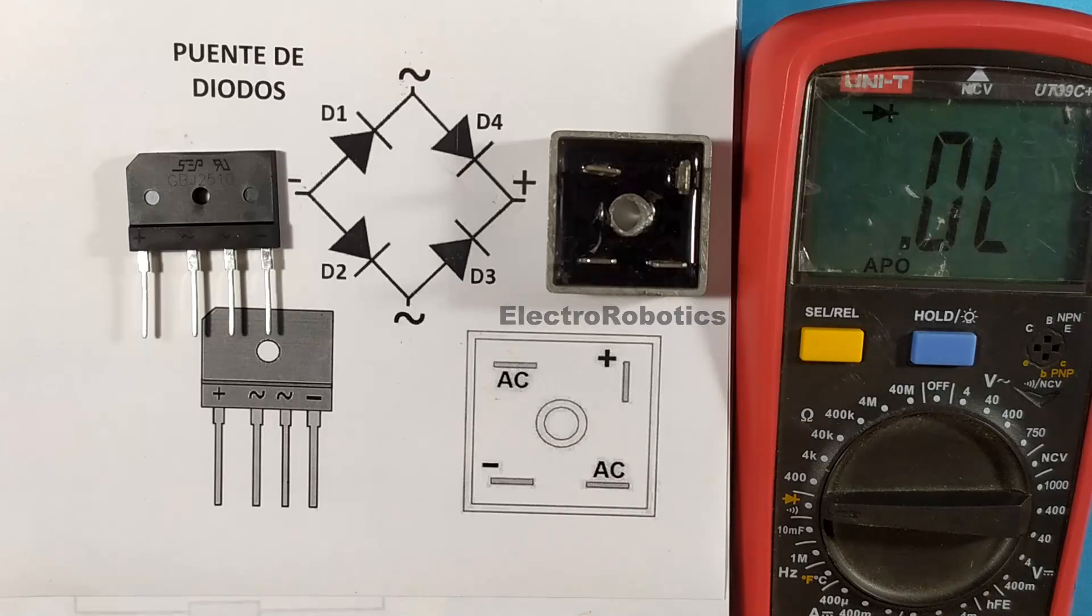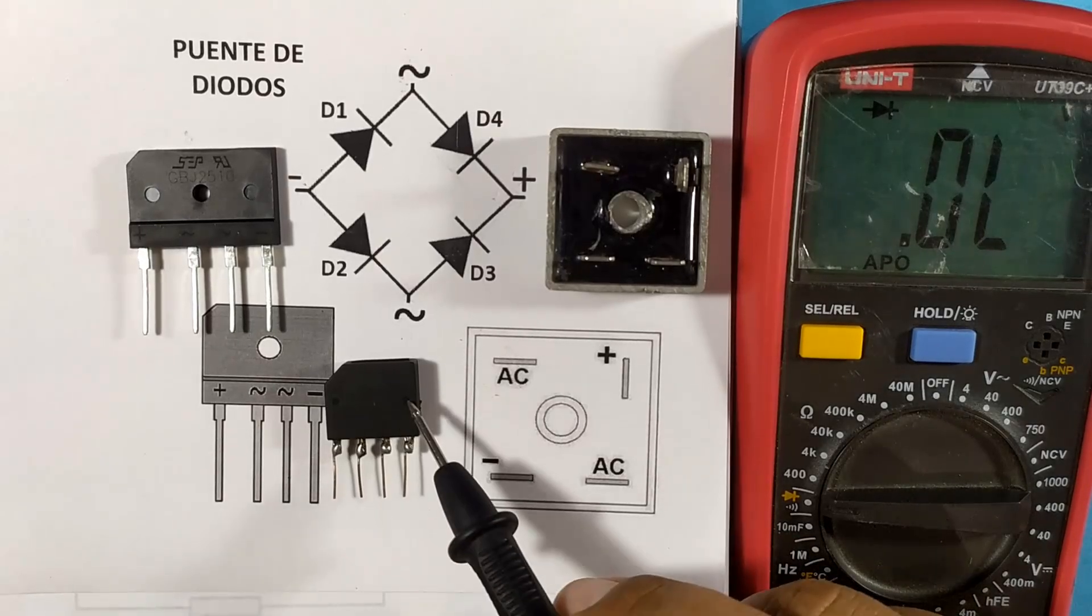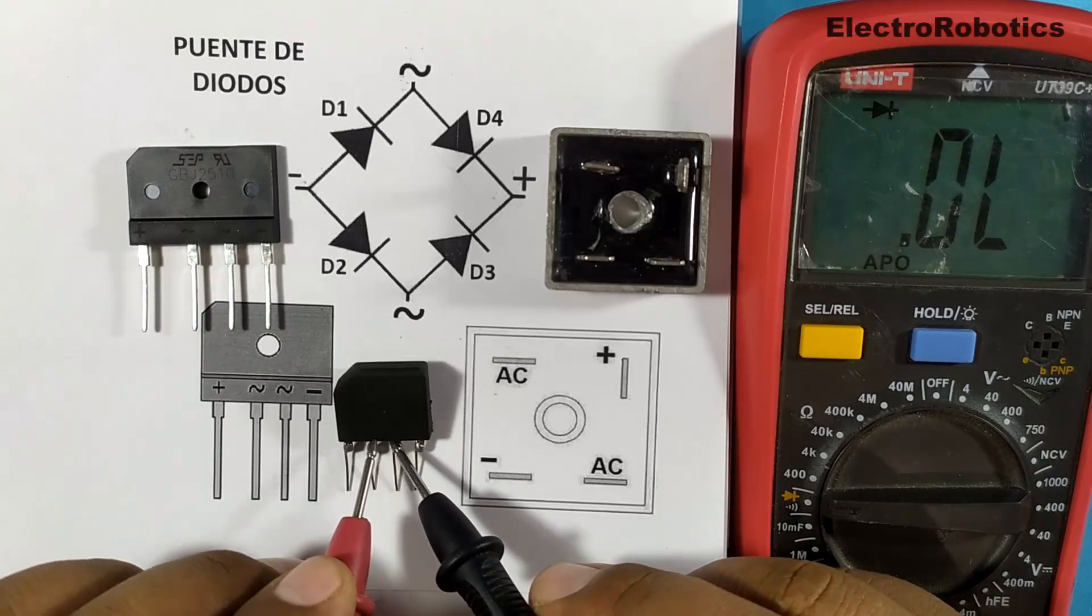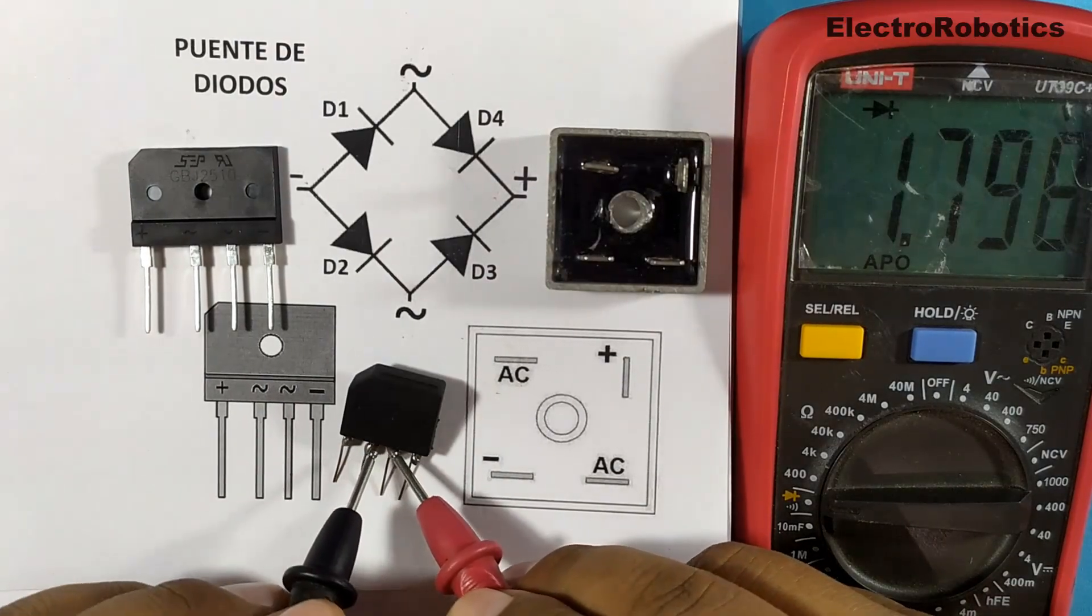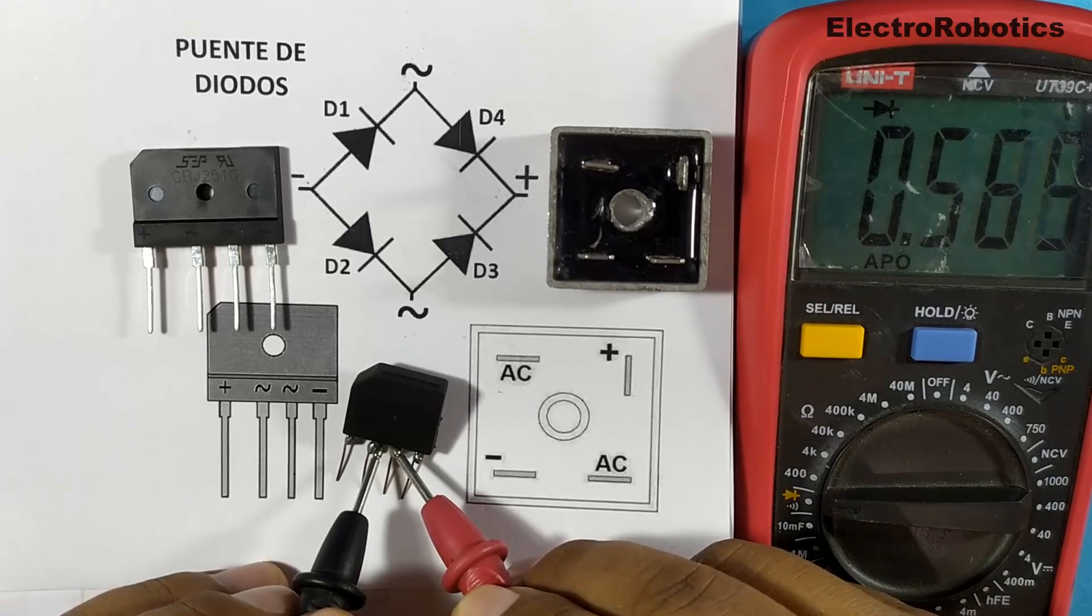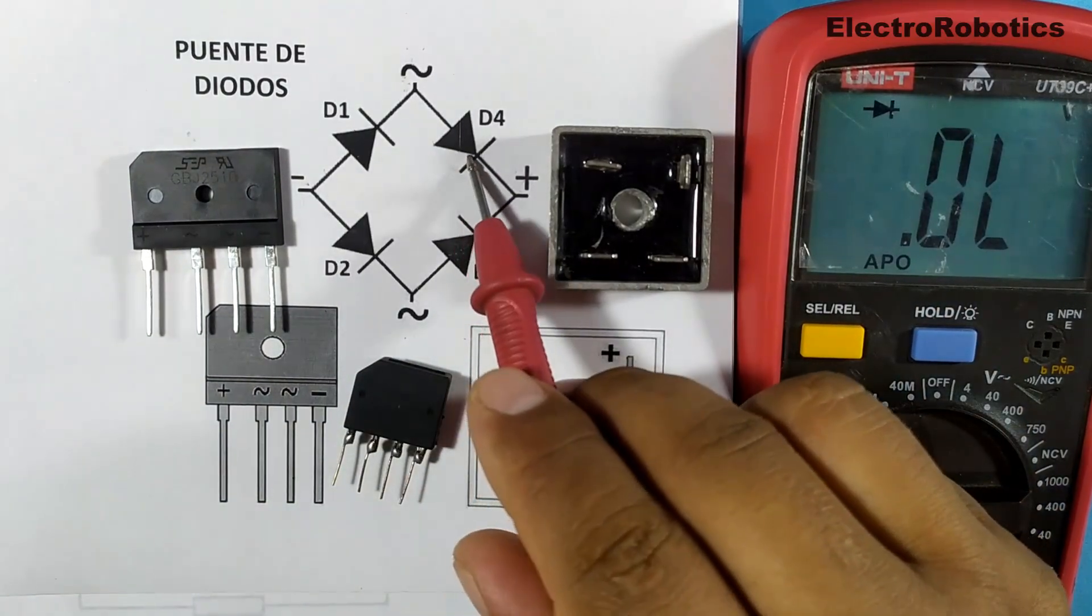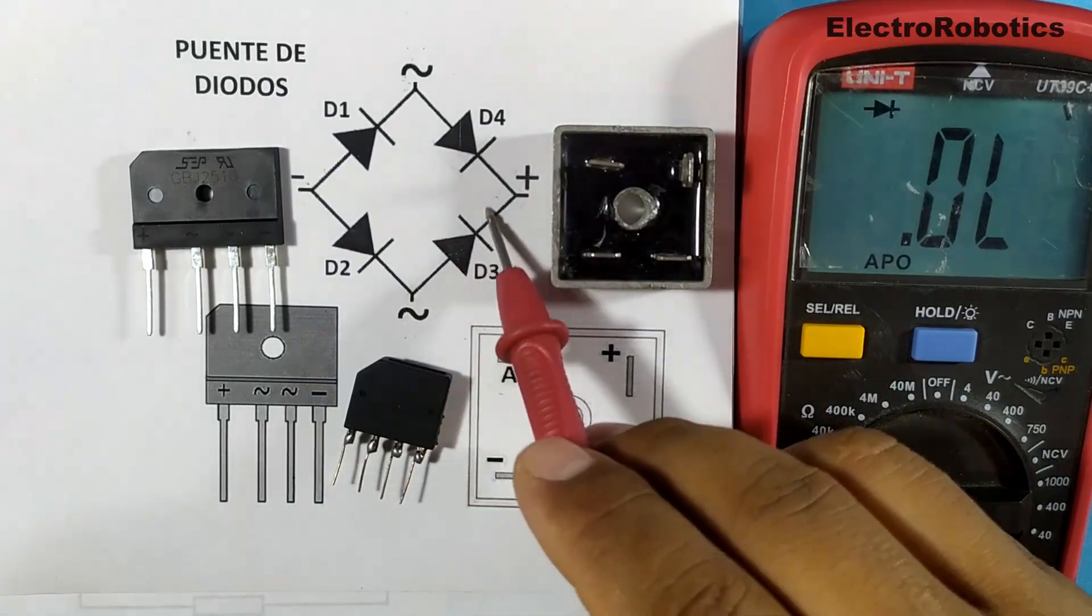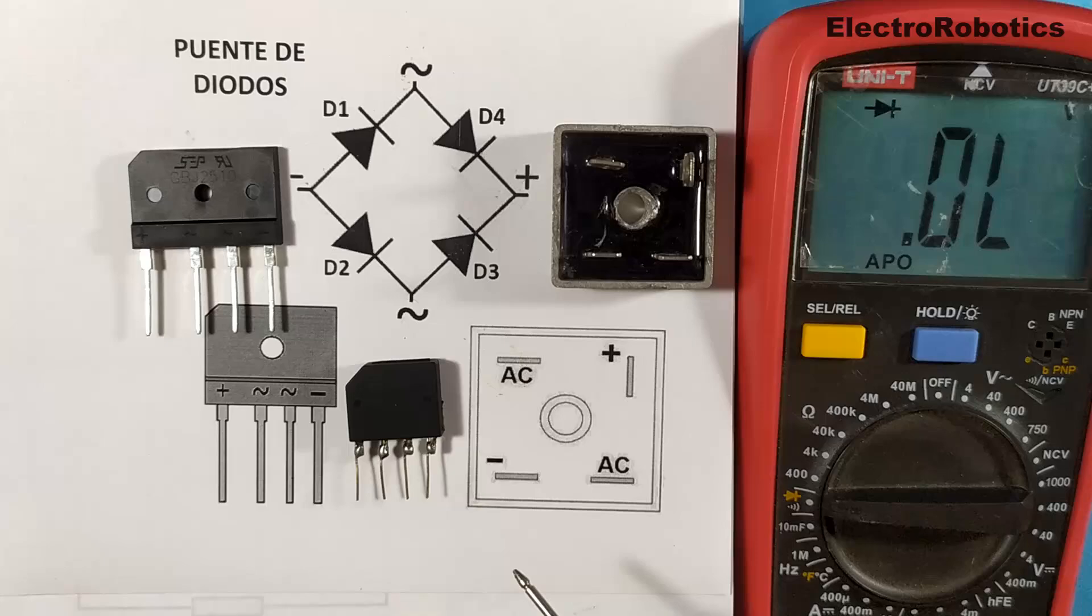Now we move on to measure another diode bridge. Let's try with this diode bridge. It has the same distribution of the pins. The input alternates. Nothing, everything is fine. We invert the tips. There I already have a problem. Since it should not measure, but in this case we have the value of a diode. It means that one of these diodes burned and is short circuited. Therefore, the reading we are doing is only for one diode. From which point the diode bridge would have to be ruled out.